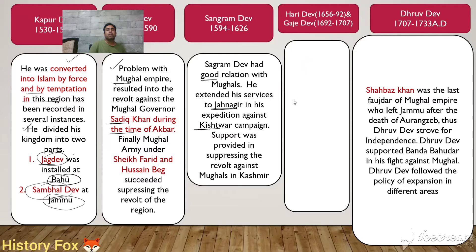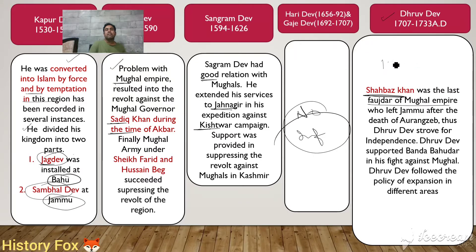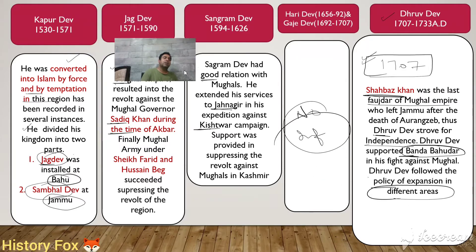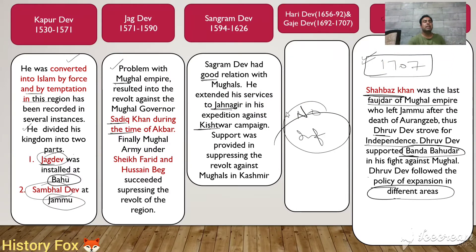We don't have any important information about Haridev and Gaj Dev. Finally, during the time of Dhruv Dev, Shahbaz Khan was the last Mughal fojdar. In 1707, when Aurangzeb died, the Mughal governor Shahbaz Khan left Jammu and went to Delhi, which resulted in Jammu becoming independent. Dhruv Dev strove for independence and supported Banda Bahadur — the prominent Sikh commander of the Khalsa army — in his fight against the Mughal Empire. Dhruv Dev also followed a policy of expansion in different areas. This was the chronology of Jammu rulers before Ranjit Dev.